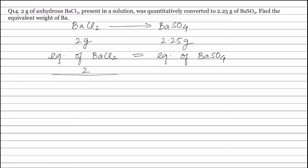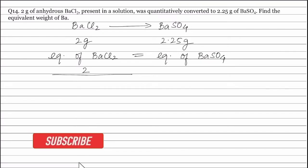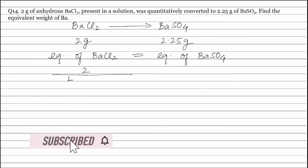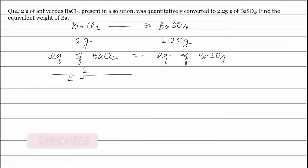Equivalence of barium chloride equals weight of barium chloride divided by equivalent weight of barium chloride — that is 2 divided by (E + 35.5), where E is the equivalent weight of barium and 35.5 is the equivalent weight of chlorine.